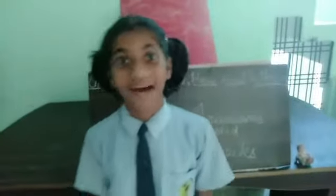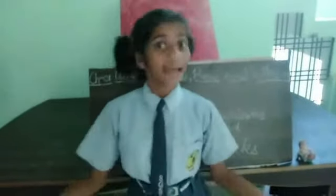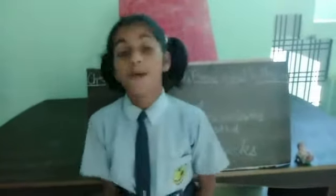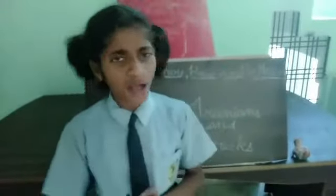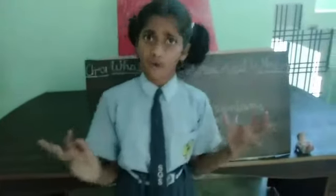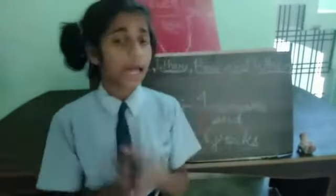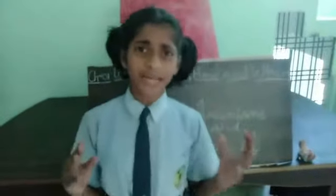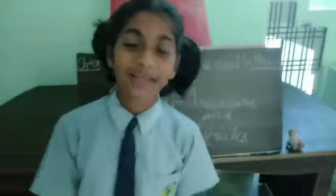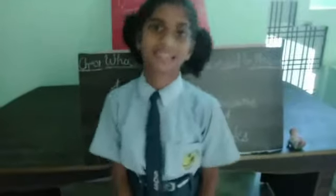Hello friends, I am again with our subject history. The book name is 'Our Past.' So first we know what is past. Sometimes we know about thousand or million years ago — this is called our past.